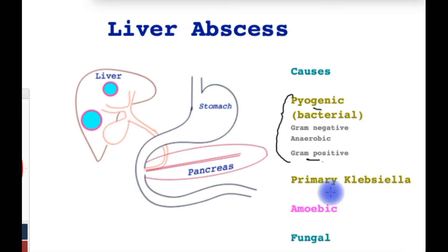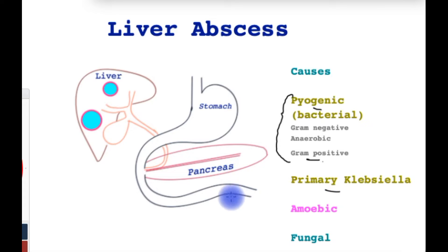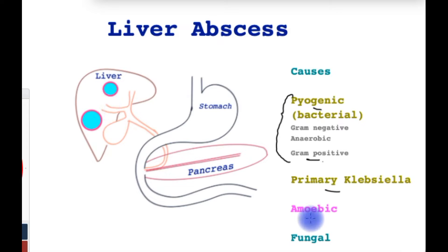In some parts of the world, a bacteria called Klebsiella may cause liver abscess in the absence of another primary source, occurring directly within the liver itself.